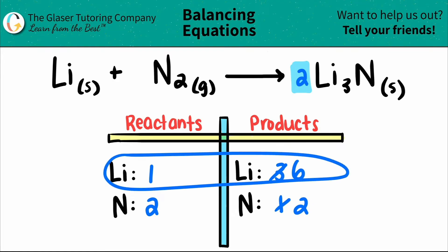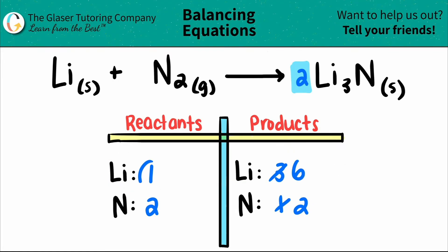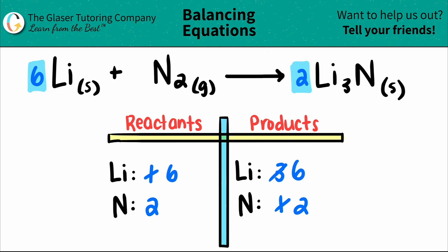Now the lithium just needs to be balanced. The lower number is one. One times what will get me to six? One times six. And that number is the coefficient that you put in front of the element you want to balance, so I put a six here. And that's the only element, so I don't have to do any distributing. So there's a six, and now both elements are balanced across the board — all six and all twos for lithium and nitrogen. So we're balanced.